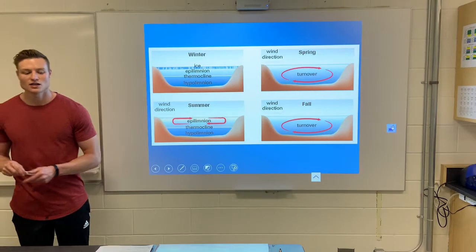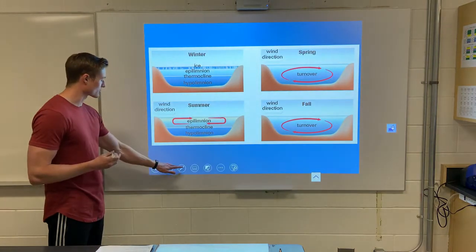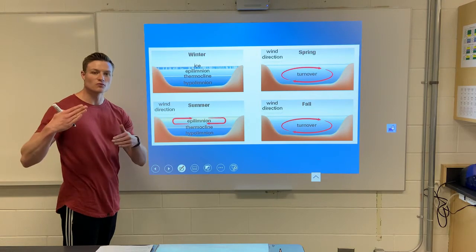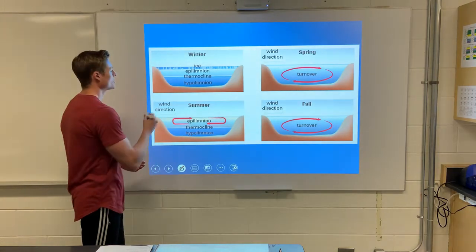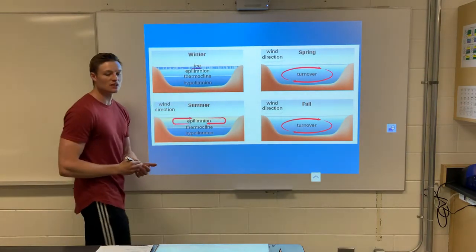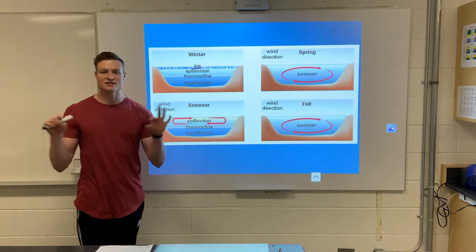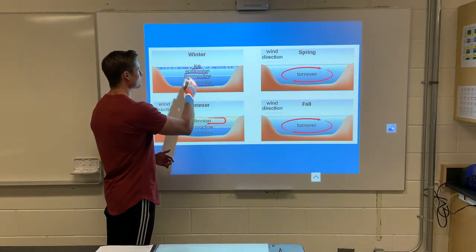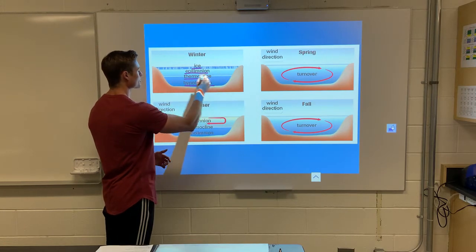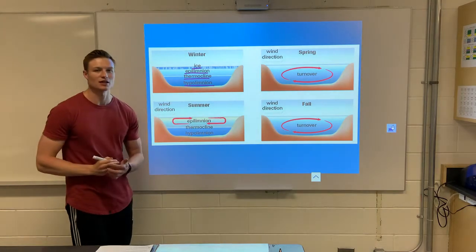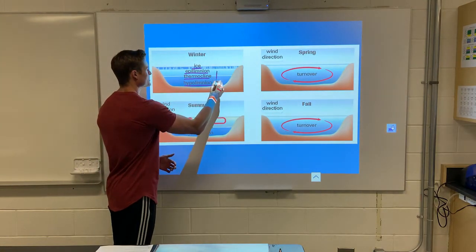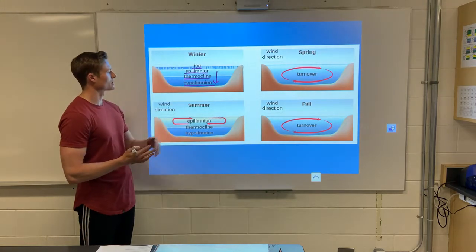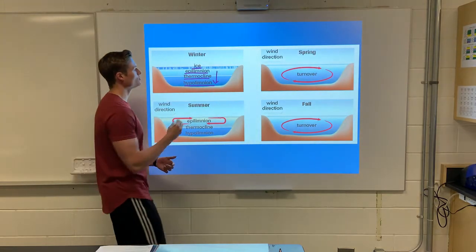Now let's talk about the seasonal variation of lakes — anywhere with four seasons, like here in Canada. Starting in winter, we have distinct layers forming with little thermal movement. There's a top layer of ice — less dense, floating on top. Below that we have the epilimnion, then the thermocline, then the colder hypolimnion at the bottom. The thermocline separates these layers, so there's not much water movement or oxygen movement during winter.